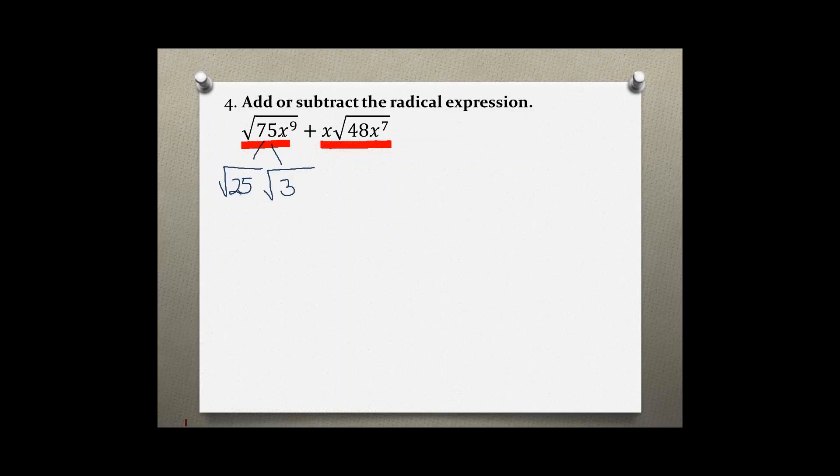When we have variables with exponents, because this has index 2, the exponent needs to be divisible by 2. So 9 is not divisible by 2, but I could take out 1x from x to the 9th power and I'm left with x to the 8th power, which now is divisible by 2. So this would be its perfect part.